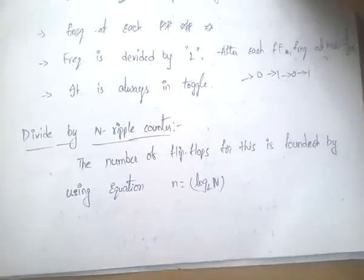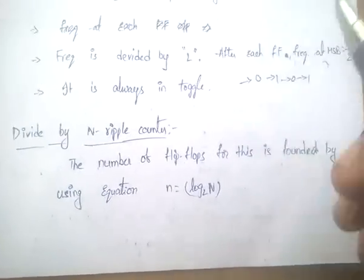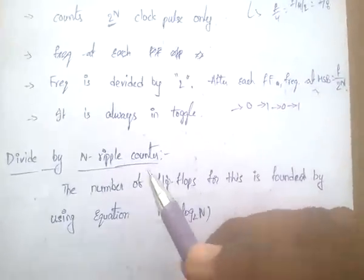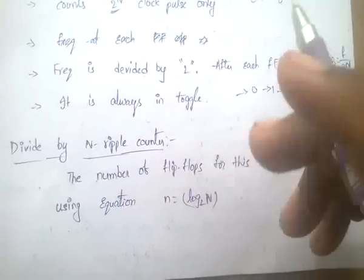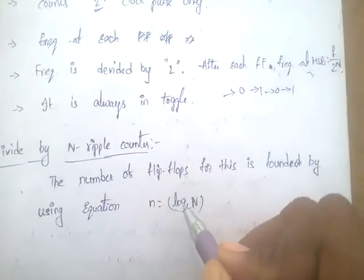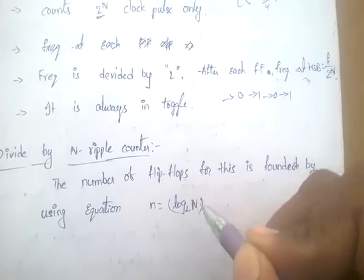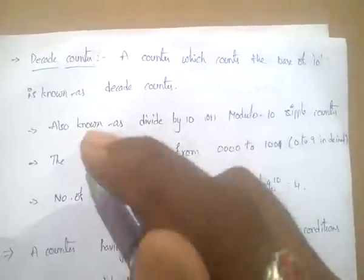Next, the divide-by-n ripple counter. For a divide-by-n ripple counter, the number of flip-flops required equals the ceiling of log base 2 of n — written as n = log₂(N), where N is the modulus.